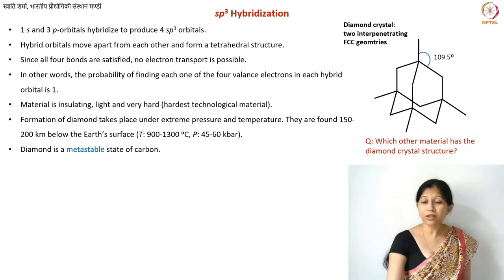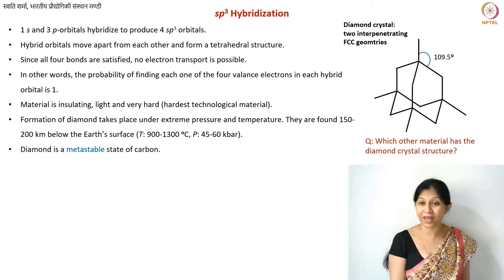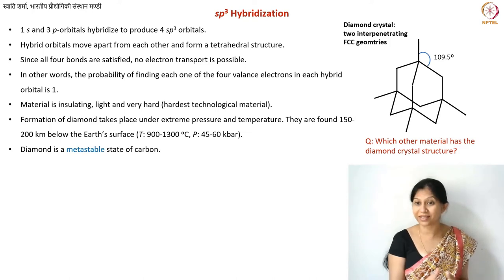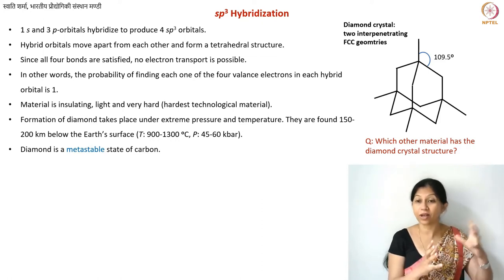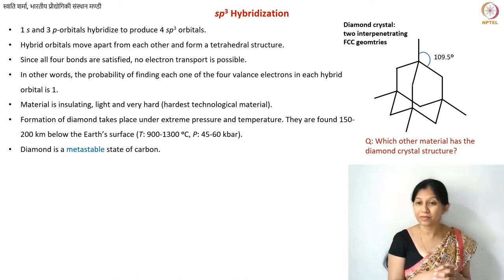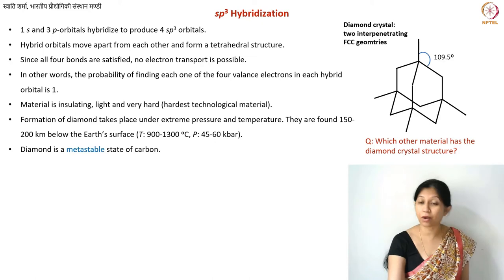It is clear that you need extreme conditions for the formation of diamond, and that is why you find more graphite in nature compared to diamond. There have also been many experiments where people have been able to synthetically prepare diamonds. Synthetic diamonds are commonly used in cutting tools. However, the conditions required for formation are still extreme — high temperature and pressure — and the crystals obtained using synthetic processes are relatively small, so they are not large-scale diamond crystals but rather small crystallites used for making tools. We also have films of diamonds used as coatings for many tools.